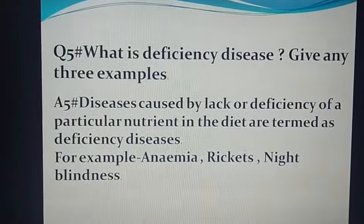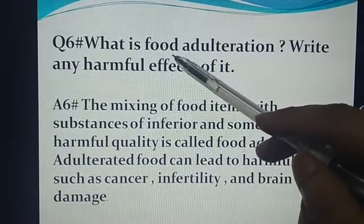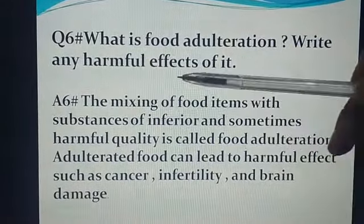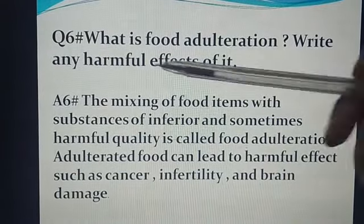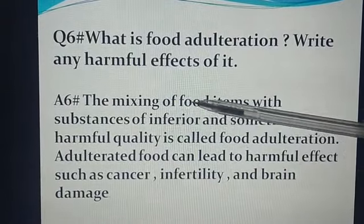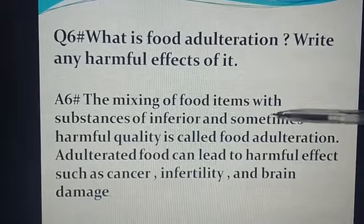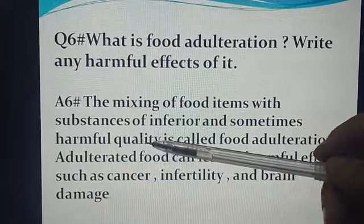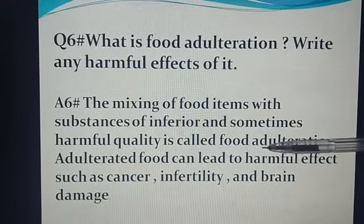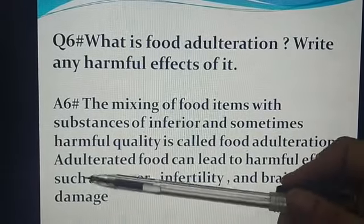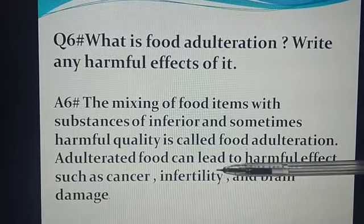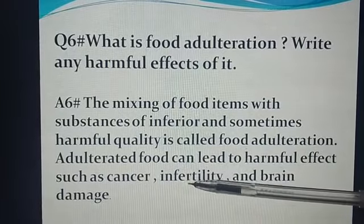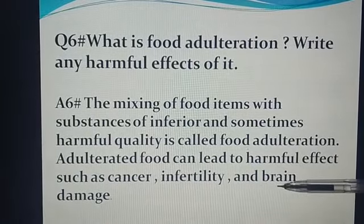Question number 6: What is food adulteration? Write any harmful effects. Answer: The mixing of food items with substances of inferior and sometimes harmful quality is called food adulteration. Adulterated food can lead to harmful effects such as cancer, infertility, and brain damage.